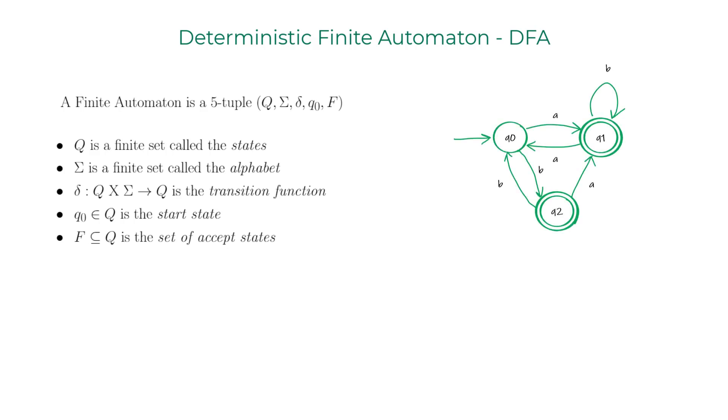I'll be using this DFA to break down all the points mentioned in this formal definition one by one. Q is a finite set called the states. It is basically the set of all the states in the DFA. Here we have Q0, Q1, and Q2, so Q is the set with the elements Q0, Q1, and Q2.